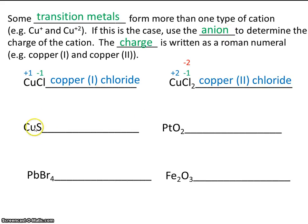Copper sulfide. Well, copper is a transition metal, so we need to say the charge. Let's use the anion to help us. Because the anion is sulfide, which has a charge of minus 2. So copper must be plus 2. So the name of this compound is copper 2 sulfide.